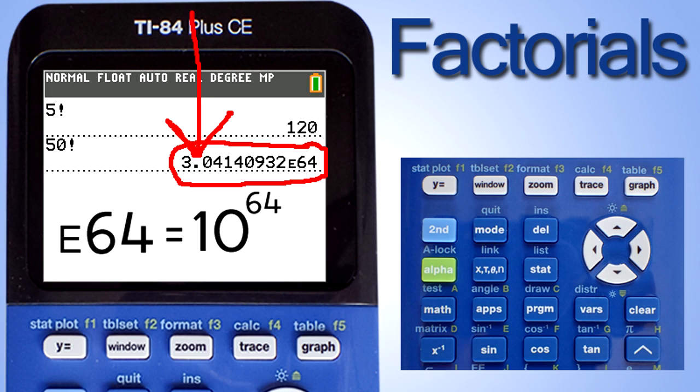That is a very large number. In fact, there is a limit in this calculator in which you can calculate factorials. If you calculate a factorial of a number too large, you will get an error message.